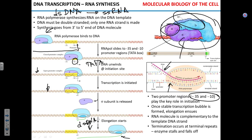RNA polymerase — does it always choose the same strand of the double strand to produce RNA? Yes, there is one template strand and one non-template strand. RNA polymerase chooses the template strand and transcribes it.